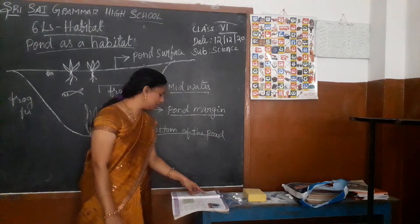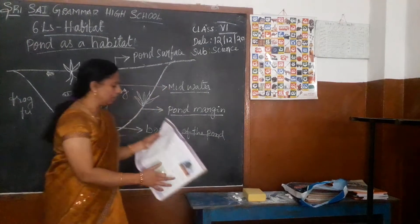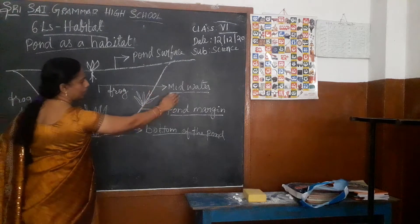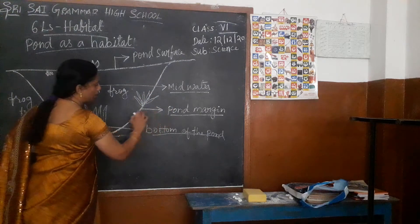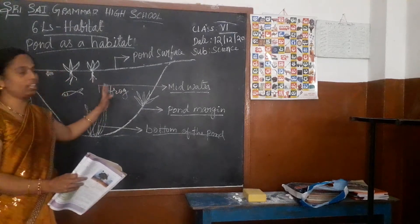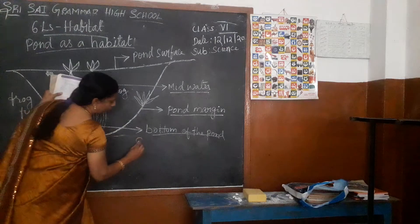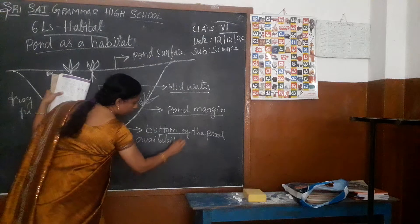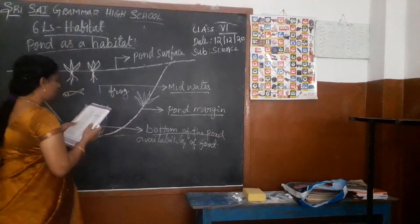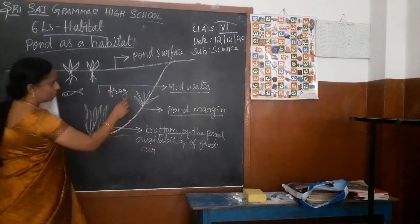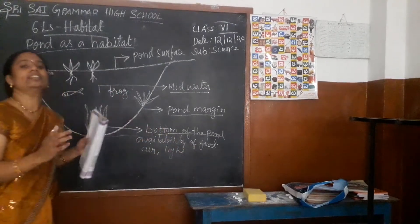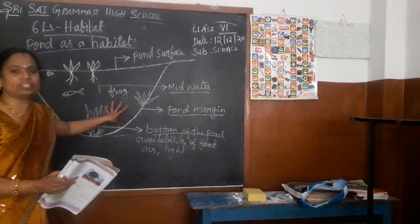In the pond, we find different organisms living in different regions. This is due to sub-conditions. Why are they living in different regions? Some organisms live on the surface, some in the middle of the water, and some on the margins and the bottom. They live in different places because of the availability of food. Availability of food and also different amounts of air — and also due to the availability of light. Some require very little light, some require more light. So they live in different regions, different levels.